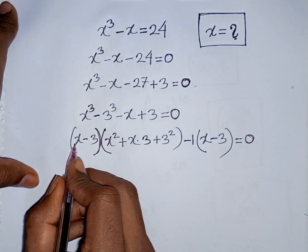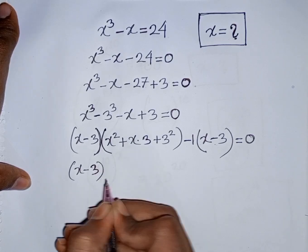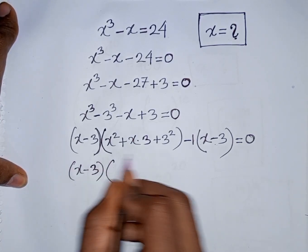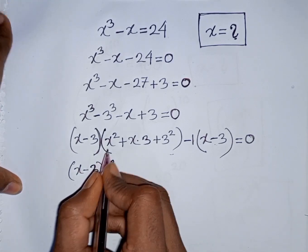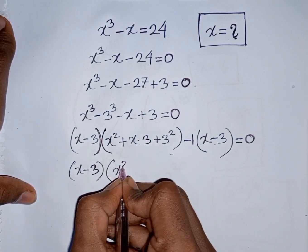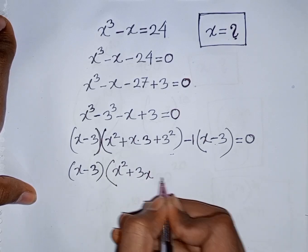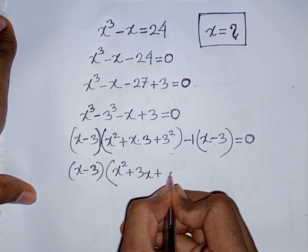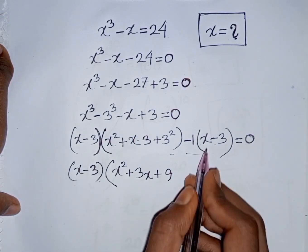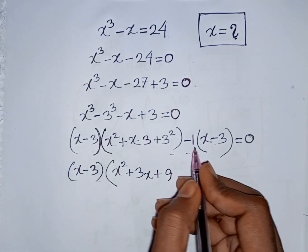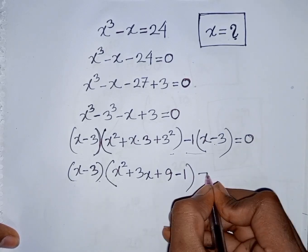Now we take (x - 3) as a common factor. So (x - 3) is factored out. After cancelling (x - 3), we have x² + 3x + 9 from the cubic formula part, and then -1 remaining from the other factor, all equal to 0.